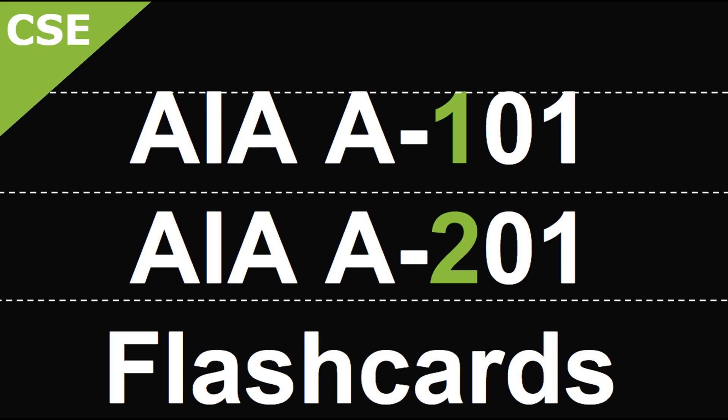AIA 101 and AIA 201 flashcards. What's the standard form of agreement between the owner and contractor where the basis of the payment is a stipulated sum? A101 is the standard form of agreement between owner and contractor where basis of payment is a stipulated sum.